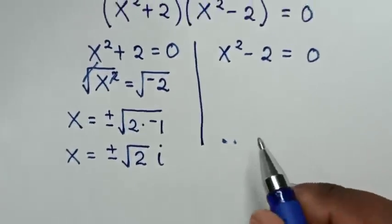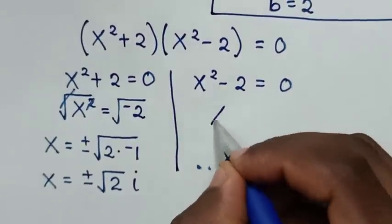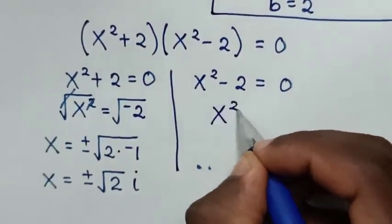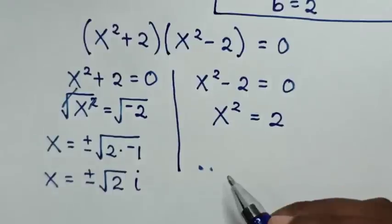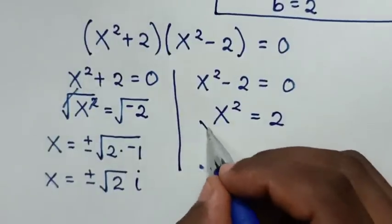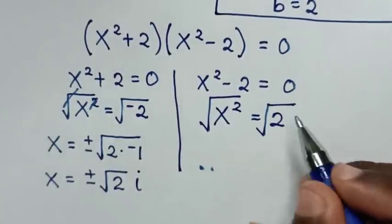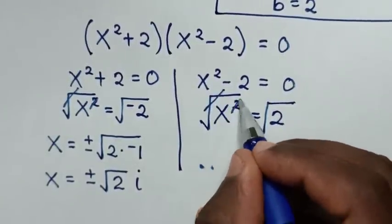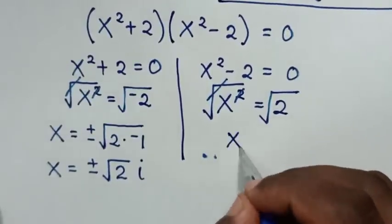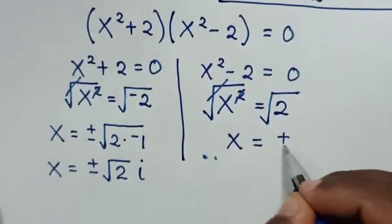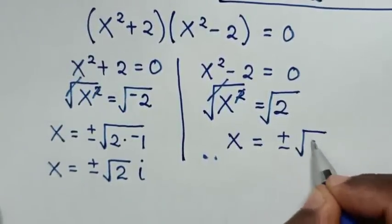To solve the second solution, we take negative 2 to the right side, so it will be x square is equal to 2. We apply square root on both sides, so the square root cancels with the square. Then x is equal to plus or minus square root of 2.